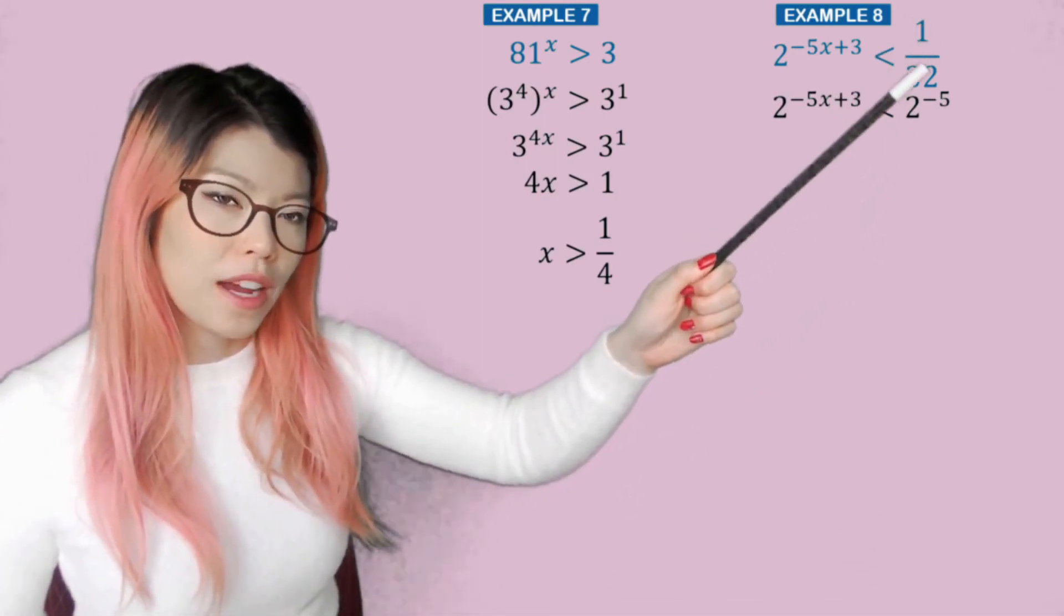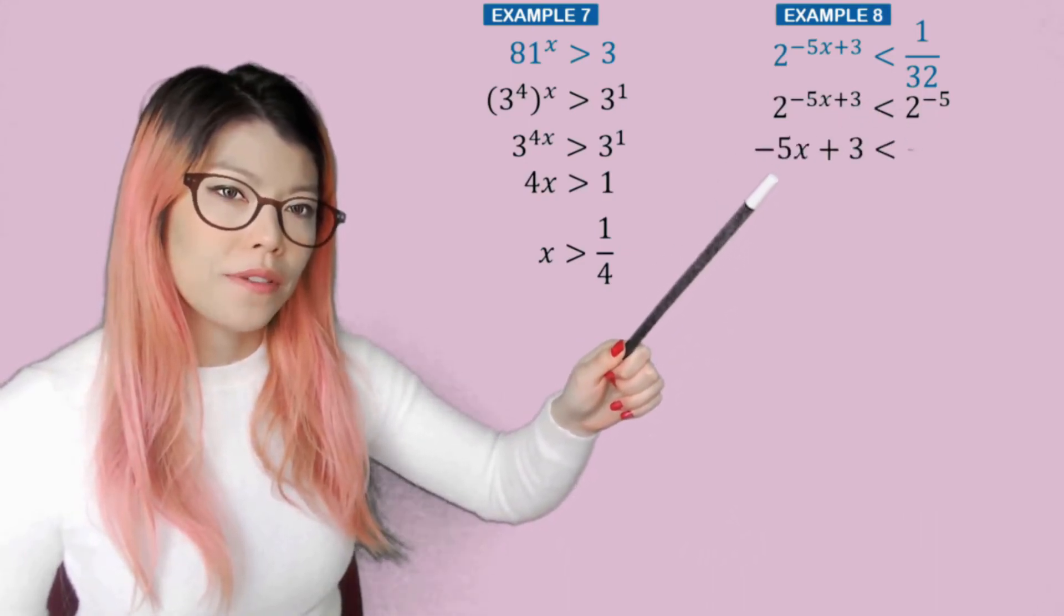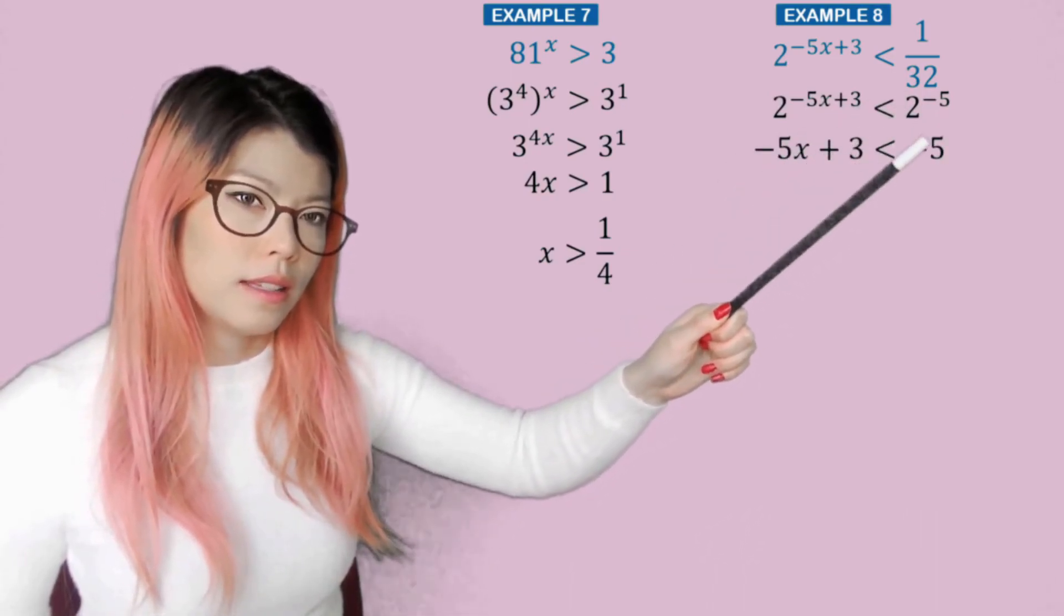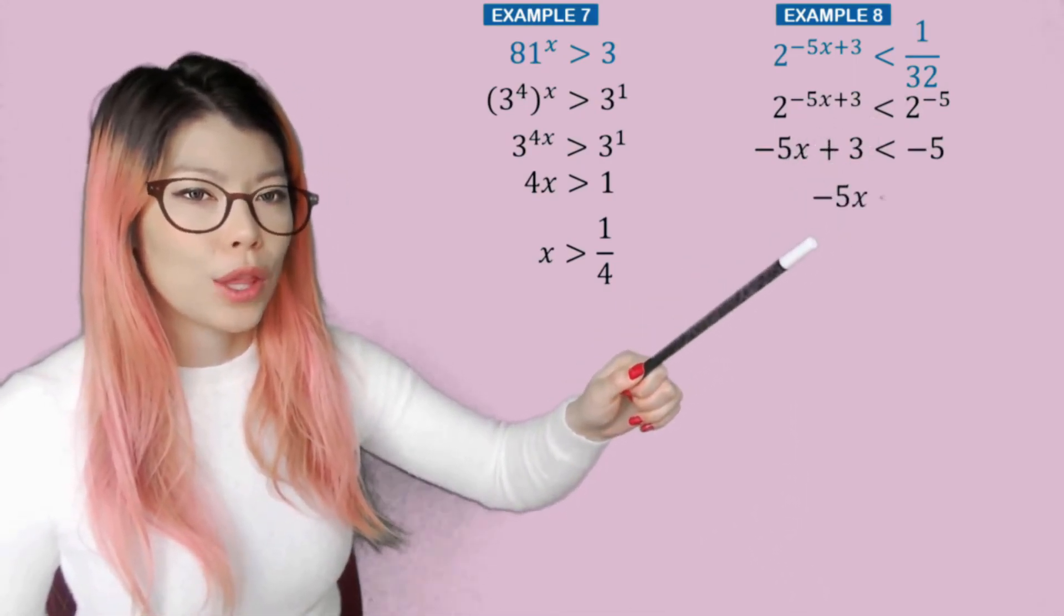So now remember, that's a fraction, yeah? That's why it's negative 5 there. So now we can equate the powers, negative 5x plus 3 is less than negative 5. We're using the same symbol. Subtracting 3 on both sides, we have minus 5 minus 3 is minus 8.